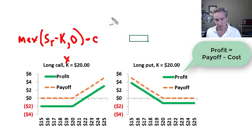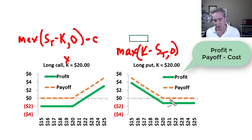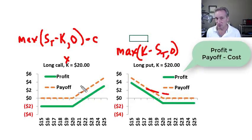For the long put, the payoff is the maximum of the strike minus the future spot price. Being the right but not the obligation, if there's no intrinsic value the buyer or holder of this put won't exercise — so it's bounded by zero. An interesting fact: the long call has theoretically unlimited payoff because the stock price could go as high as desired — it's uncapped on the upside. That's not the case with the put, because the stock price won't drop below zero, so the gain on the long put is actually capped, unlike with the call which is theoretically uncapped.